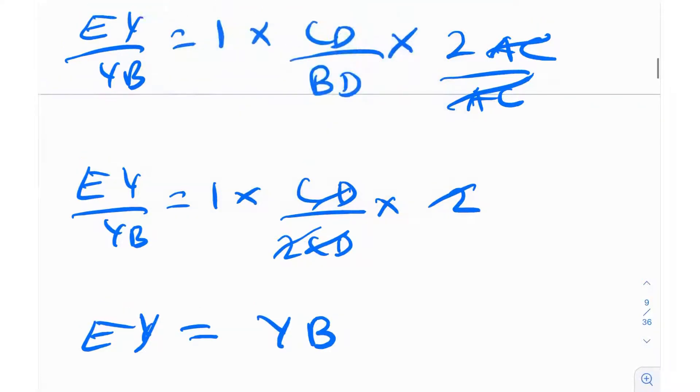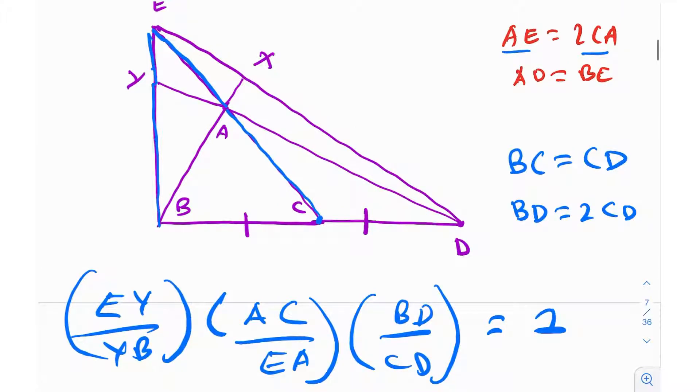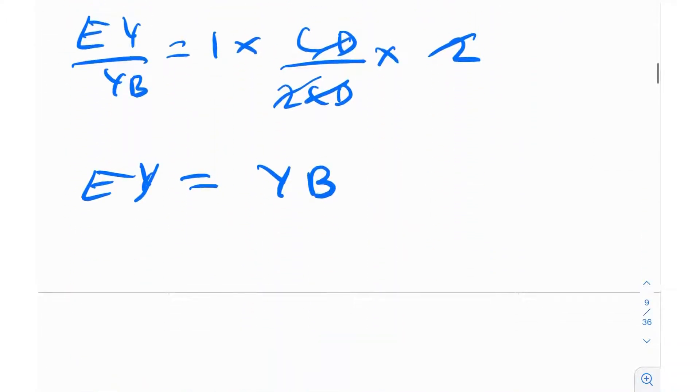And that's very fascinating because let's just mark it on the figure. So EY is equal to YB. What does that mean? That Y is the midpoint. So Y just turned out to be the midpoint of EB. So Y is midpoint of line segment EB.